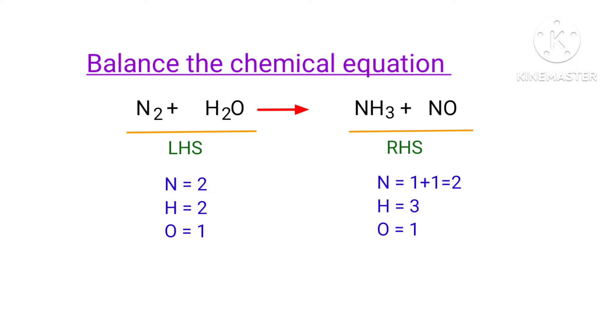The number of atoms are not balanced on both sides. To balance the chemical equation, we need to make use of coefficients. A coefficient is the number that we place in front of a chemical formula.